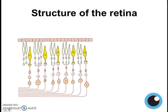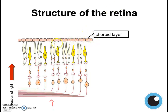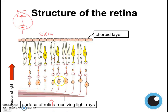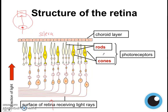Now let's take a closer look at the structure of the retina. Let's orientate ourselves to this diagram. The direction of the light is coming from here upwards — light is shining this way in. The back part is the choroid layer, and this is the sclera. So we're looking at the back of the eye: sclera, then choroid, then the retina. This is the surface of the retina which is receiving the light rays. Over here we have the photoreceptors — we have cones, which look like cones, and rods, which look like rods. These are our photoreceptors which will detect the light.